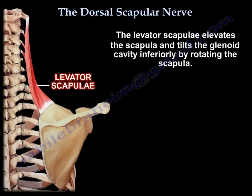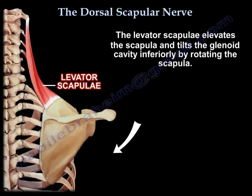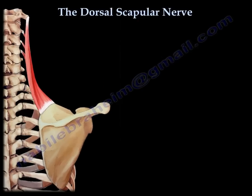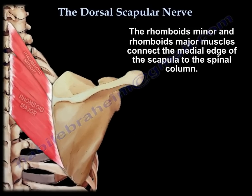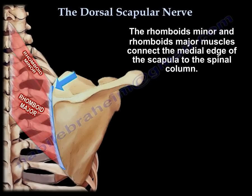The levator scapulae elevates the scapulae and tilts the glenoid cavity inferiorly by rotating the scapulae. The rhomboids minor and major connect the medial edge of the scapulae to the spinal column.